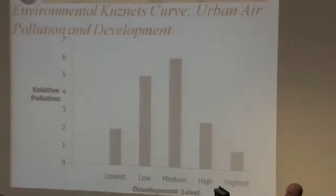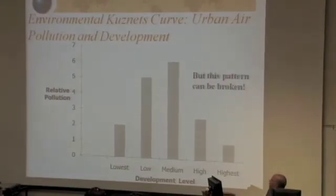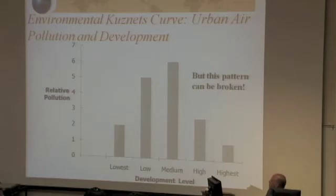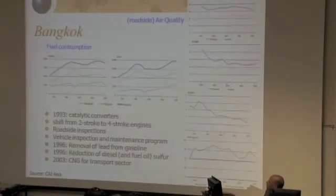This is the environmental Kuznets Curve, showing the theoretical pathway that countries have historically followed in terms of the relationship between pollution and development level. As countries develop, there's a period where development coincides with environmental degradation — this is general, not just for air pollution. Then at some point the development level is high enough that attention can be paid to this degradation and it improves. The trick is to leapfrog some of these steps. I'll give you some examples of where this has actually occurred.